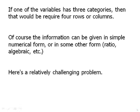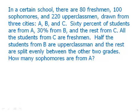Here's a relatively challenging problem. In a certain school, there are 80 freshmen, 100 sophomores, and 220 upperclassmen drawn from three cities. All right, so first of all, the 80, 100, and 220, those are the totals for different grades. We have grade level as one of our variables that has three categories. And we have the totals in each of those three categories. Then we have three cities.